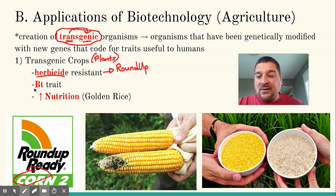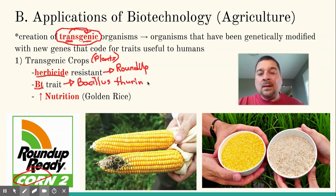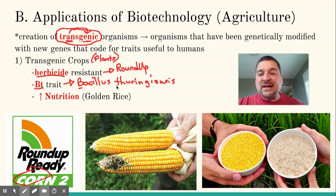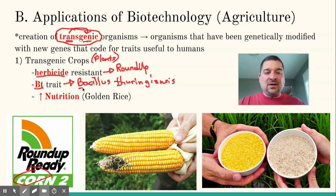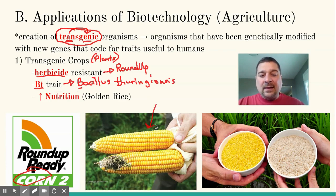There's another trait called the BT trait, which came from a soil bacterium called Bacillus thuringiensis — that's where we get 'BT' from. This soil bacteria produced a protein toxin that, when it gets into insect guts, causes them to get leaky and their guts kind of ooze out. We've put this BT trait into crops like corn.